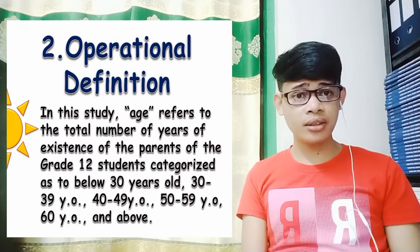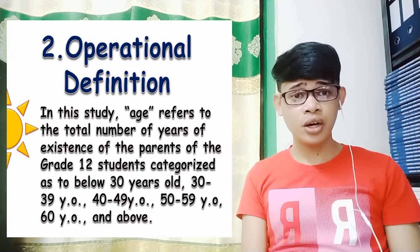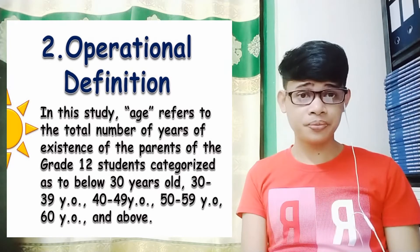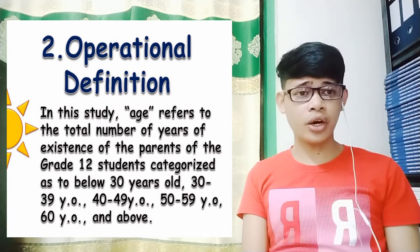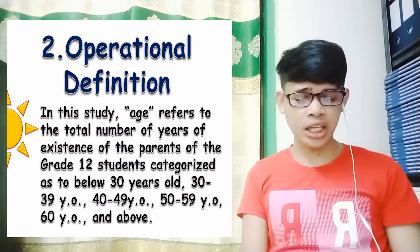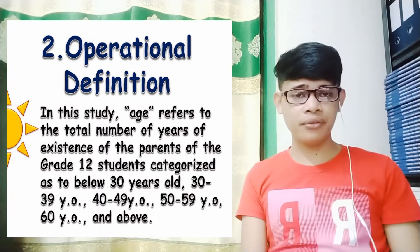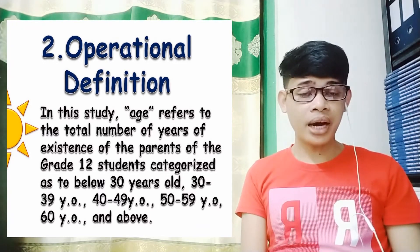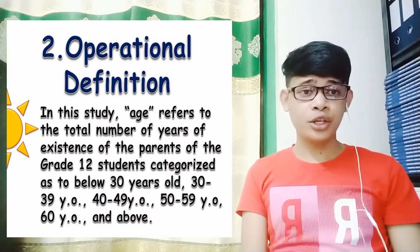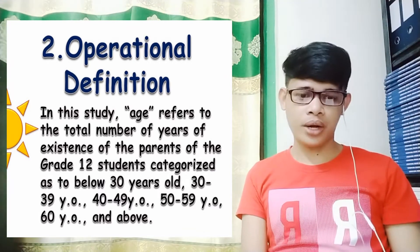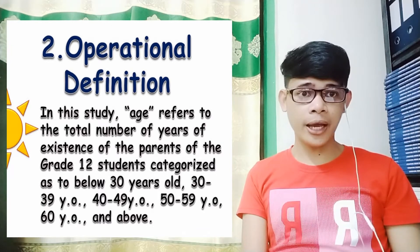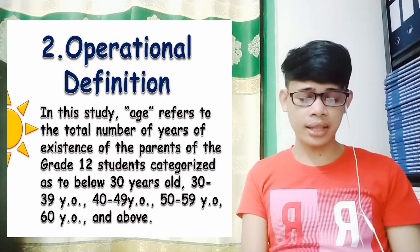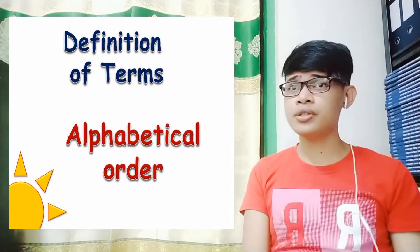The operational definition is contextualized — you indicated that age refers to the parents, and your respondents are the Grade 12 students. Usually in an operational definition the term is categorized. By including these categories, your research becomes clearer. In this context, you are studying the age of the parents of Grade 12 students from below 30 years old up to 60 years old and above.